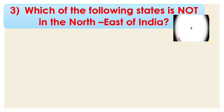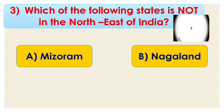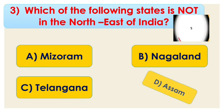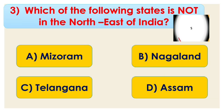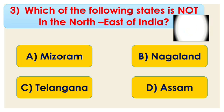Question number 3: which of the following states is not in the north east of India? Options are A. Mizoram, B. Nagaland, C. Telangana, and D. Assam. You can also write the answer in the comment box. Time is over — the right answer is Telangana. Telangana is in the south of India; it was separated from Andhra Pradesh.